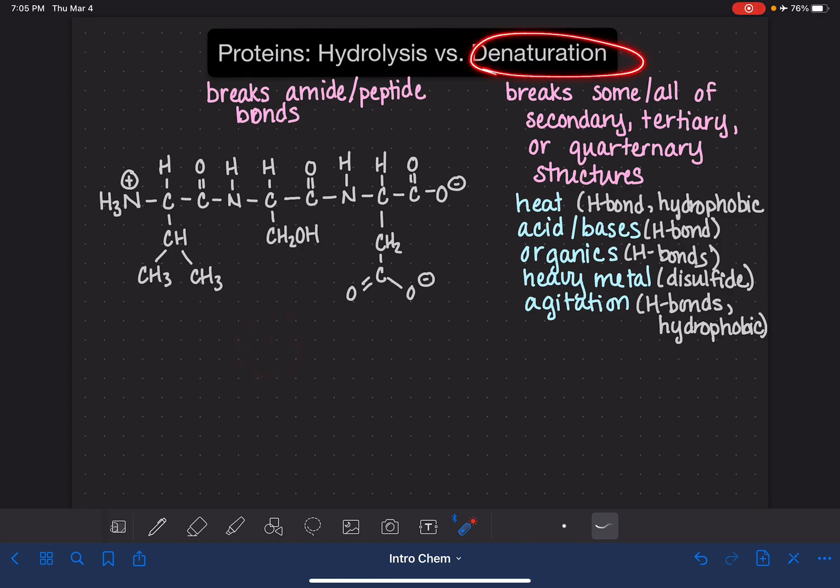Whereas denaturation is typically something that we don't necessarily want to have happen. A lot of times it's caused by some sort of external thing taking place. I'm going to show you an example of protein hydrolysis.